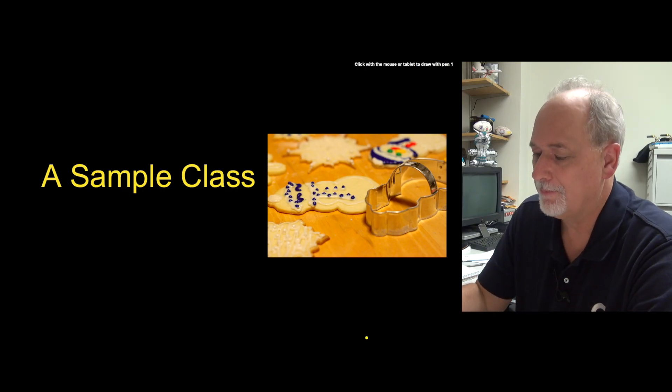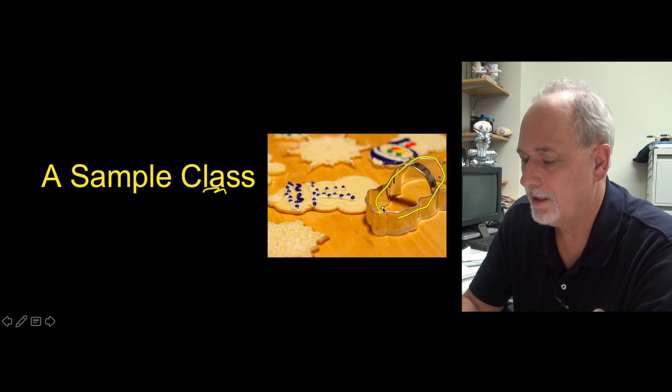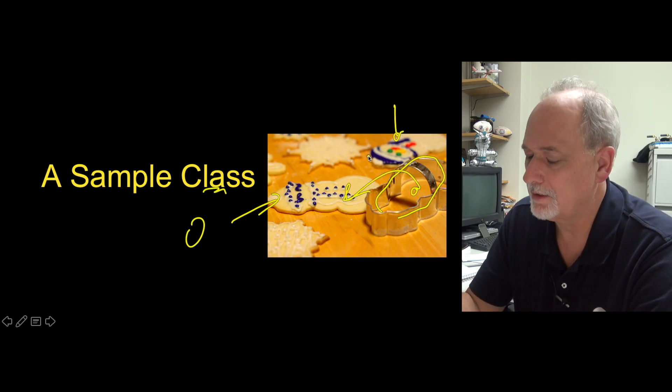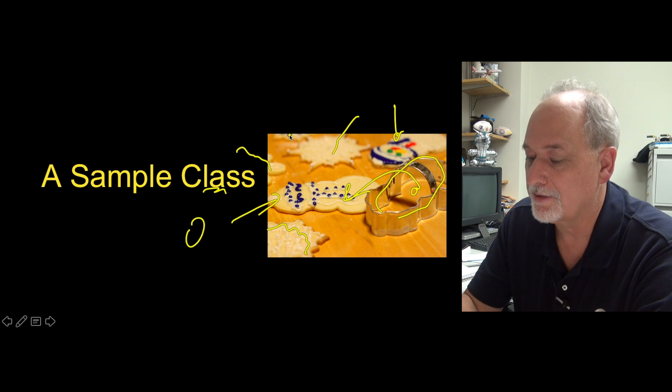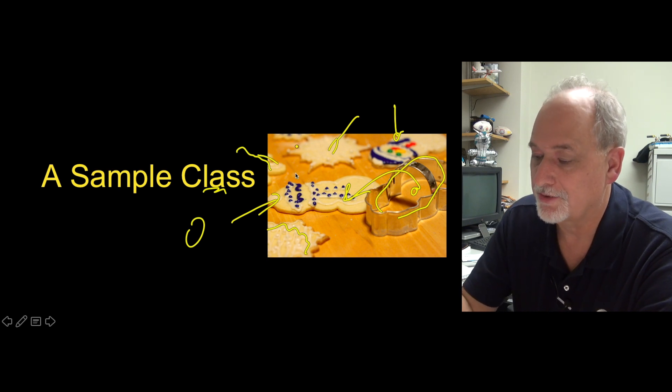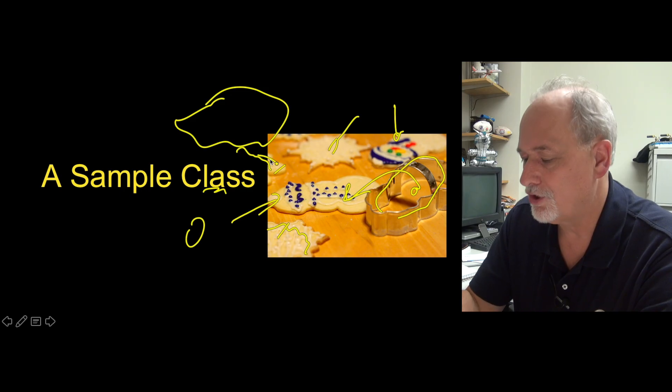So remember that a class is a template. It's not the actual thing. An object is an instance of a class. So you have to take the class and do something to make the object. And actually you can see here some other classes. There's clearly a sort of snowflake class and a gingerbread man class. That's an object, object, object. Somewhere out here there is a snowflake class and a gingerbread class.